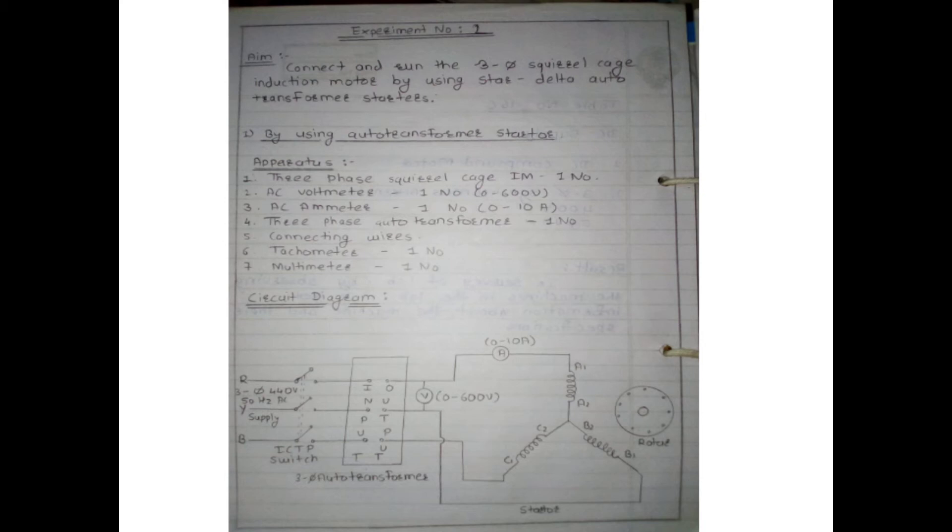Experiment number two: the aim is to connect and run the 3-phase squirrel cage induction motor using an auto-transformer starter. The apparatus required are: 3-phase squirrel cage induction motor, AC voltmeter, and AC ammeter.